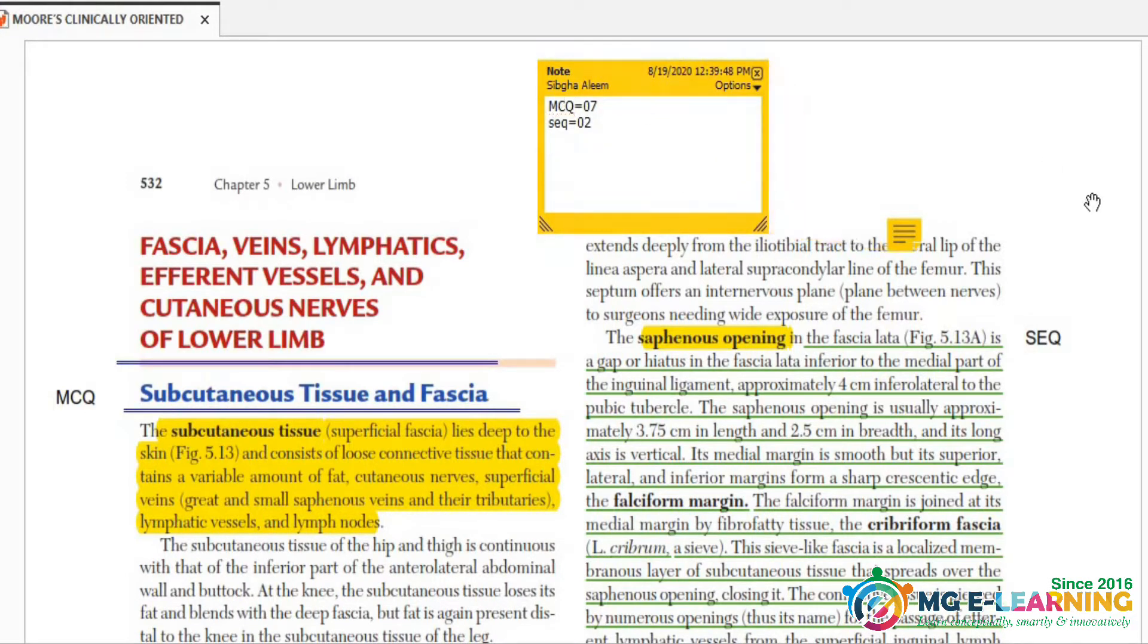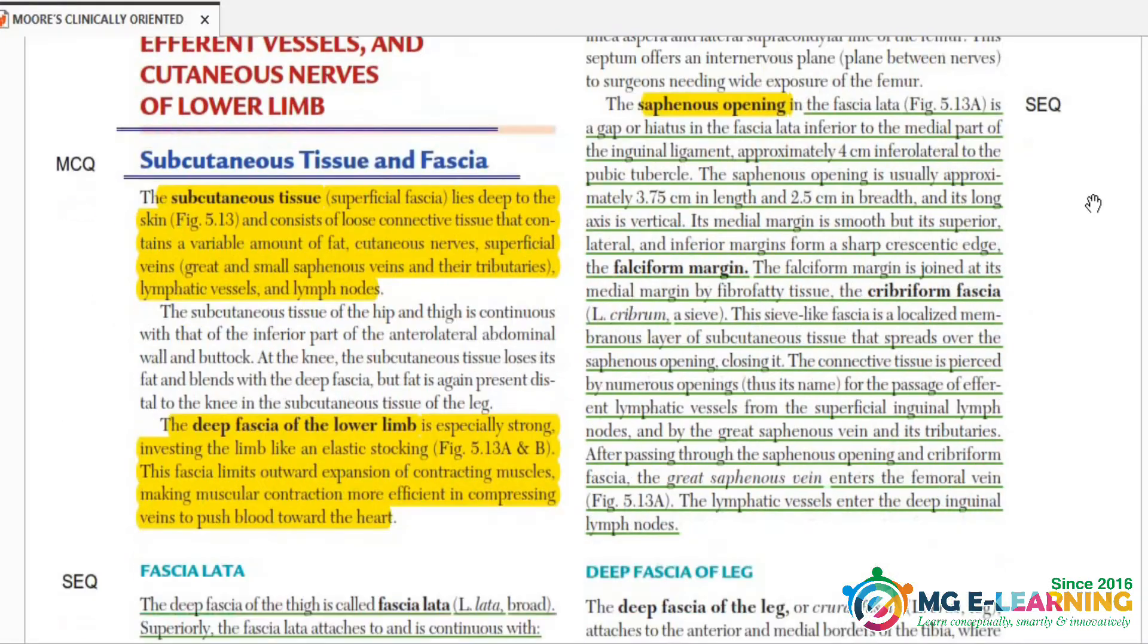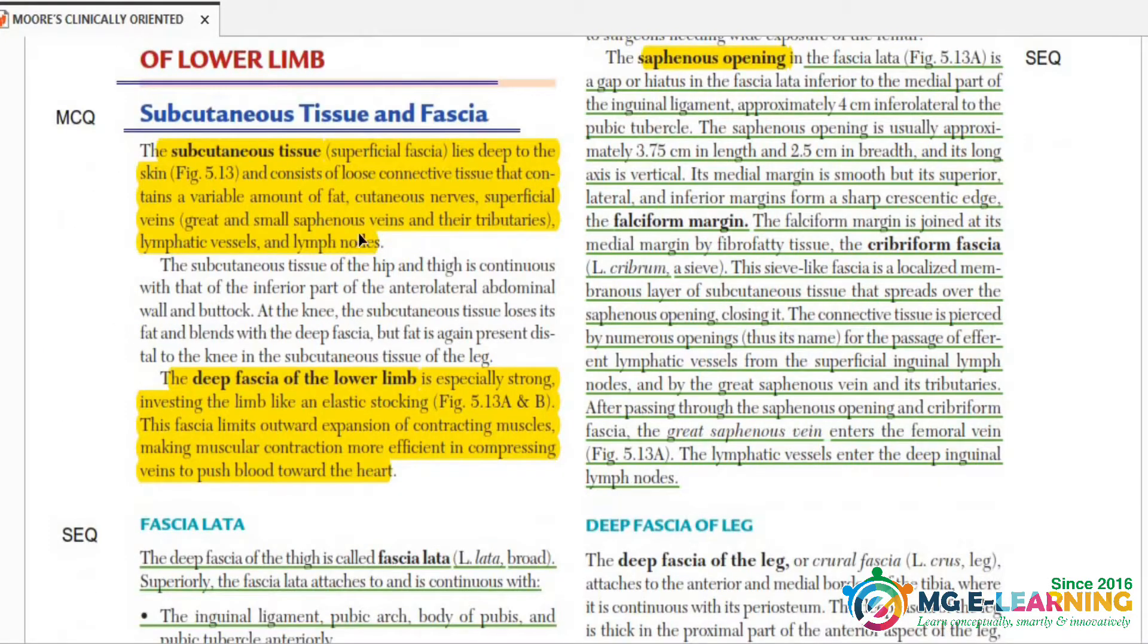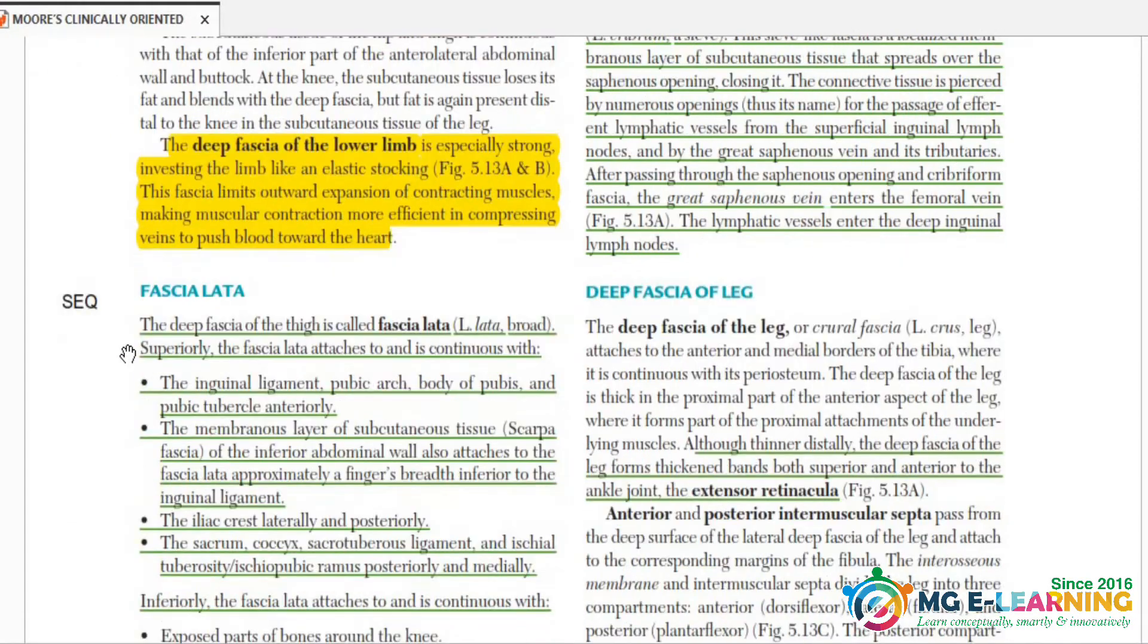Starting our chapter, first of all you have to read the subcutaneous tissue and fascia for MCQ's point of view. Next one is the SQ fascia later. It is important; you have to know its attachment.